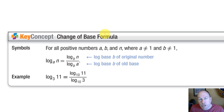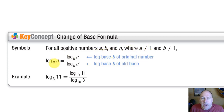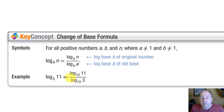The last topic in this screencast is the change of base formula. Most calculators can only do a base of 10 or a base of e; some more advanced calculators can do any base. The change of base formula states that for positive numbers a, b, and n with bases not equal to 1, log base a of n equals log base b of n divided by log base b of a. For example, log base 3 of 11 equals log base 10 of 11 divided by log base 10 of 3.